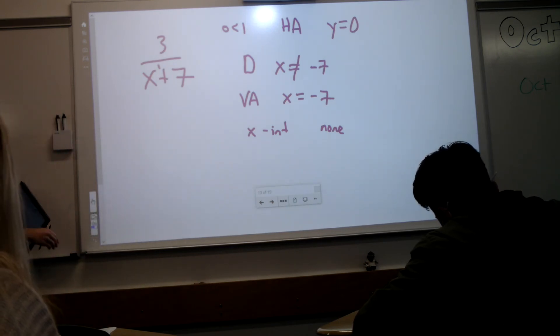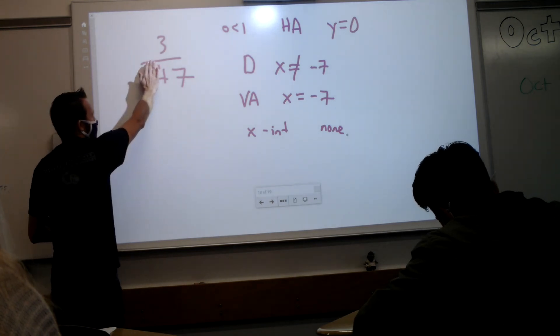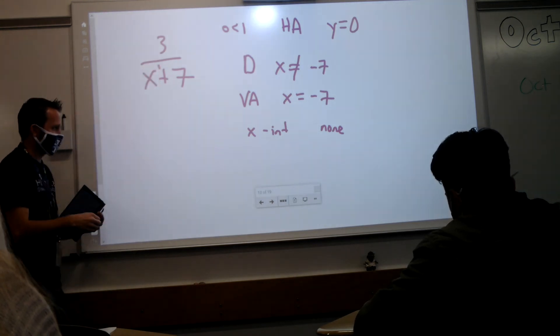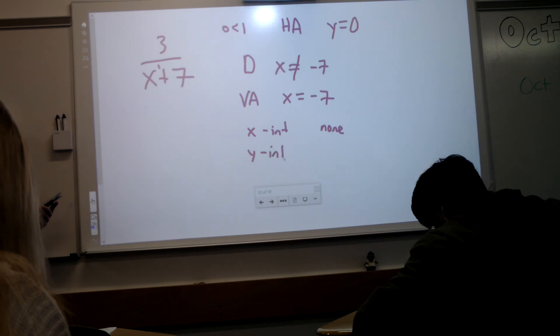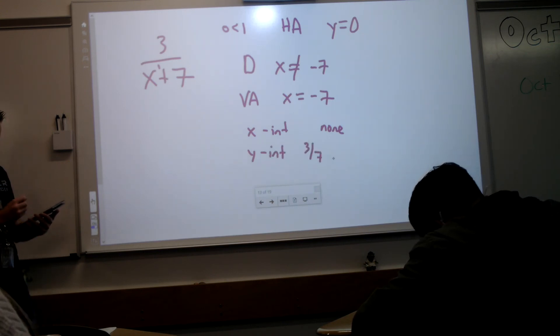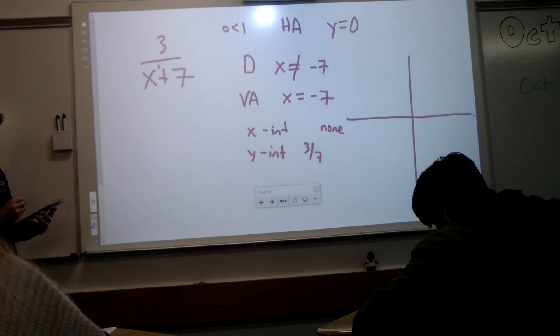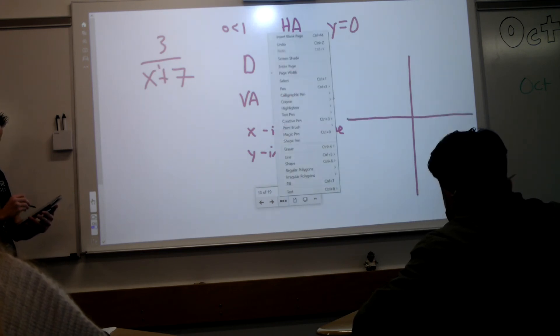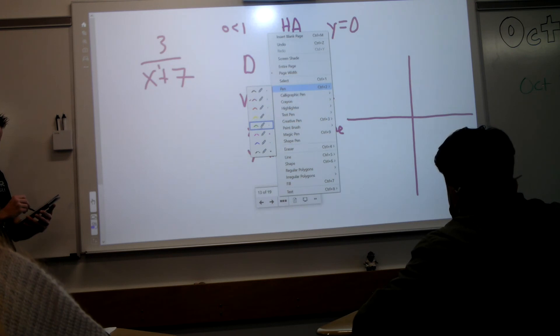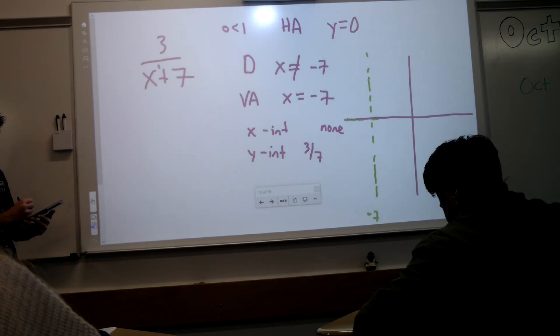Lastly, how do you get the y-intercept? Cover up the x. What is your y-intercept? Y-intercept is three-sevenths. So if I were to just, I'm doing this by hand so it's not pretty. I'm going to have a vertical asymptote at negative seven. I'm just going to say, hey, there's negative seven.